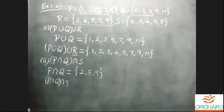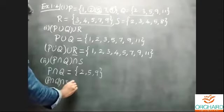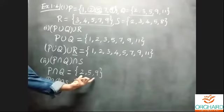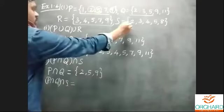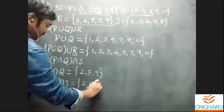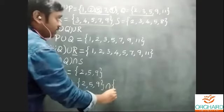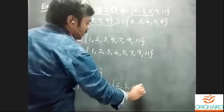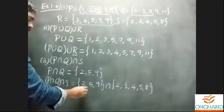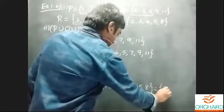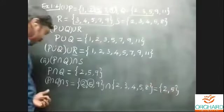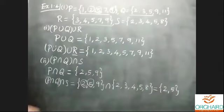p intersection q intersection s. We already know the element of p intersection q is {2, 5, 9}. Now intersecting with set s, whose elements are {2, 3, 4, 5, 8}, we find the common elements. 2 is common and 5 is common. Therefore p intersection q intersection s equals {2, 5}.